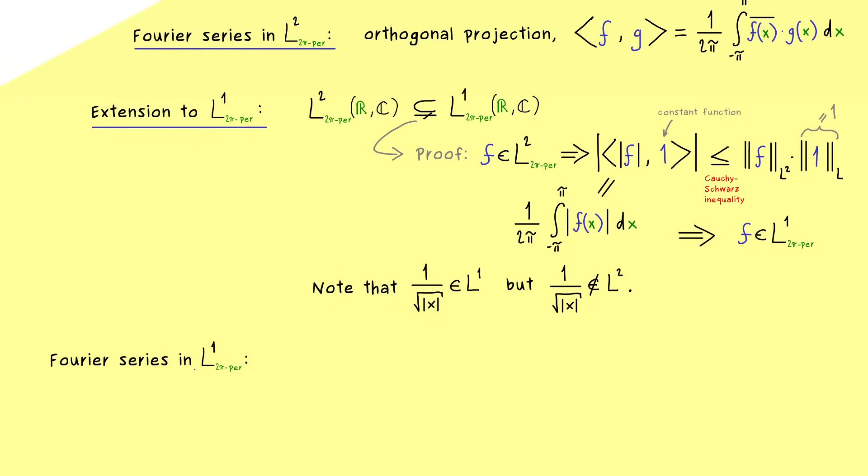But now the thing is that we don't have any problems defining the Fourier series for these functions as well. In other words the Fourier coefficients given by this inner product still exist. So please note we still use our inner product notation outside of our actual inner product space. This is possible because the inner product just represents an integral.